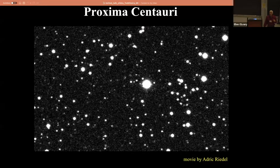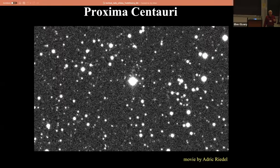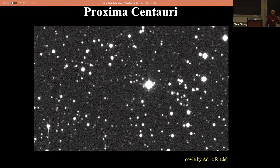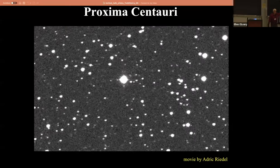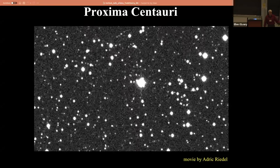The atmosphere causes something called seeing. This is what you're battling against to do astrometry from the ground all the time. The atmosphere - you're basically at the bottom of a pool looking up at your friend's face, and it's all messed up because of the bubbles in the atmosphere. That changes the sizes of the PSF.